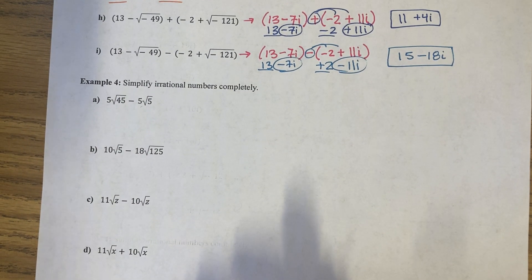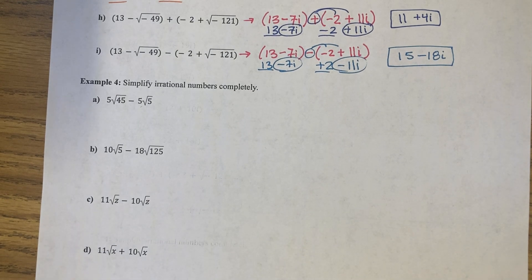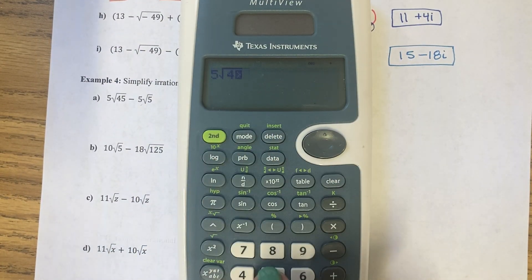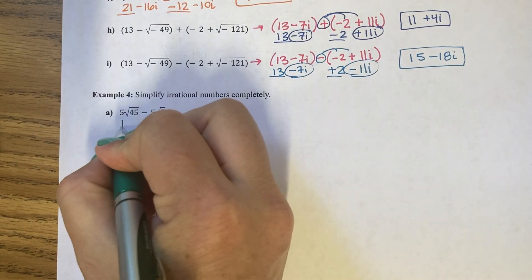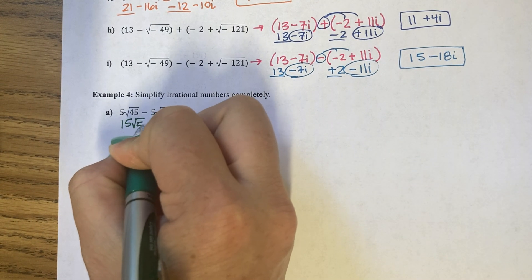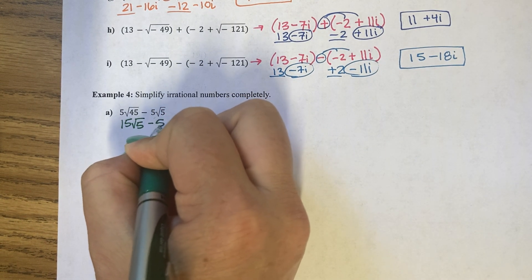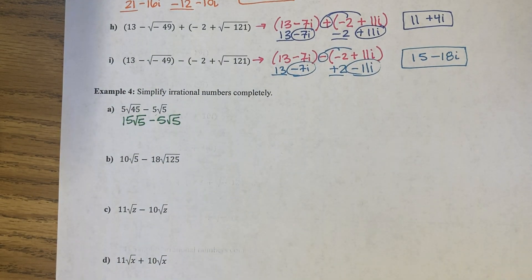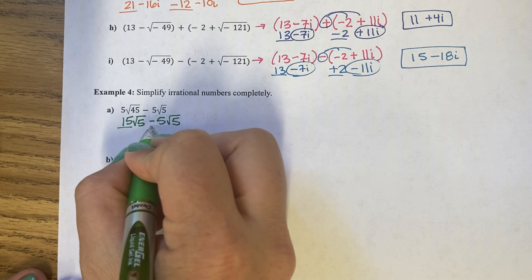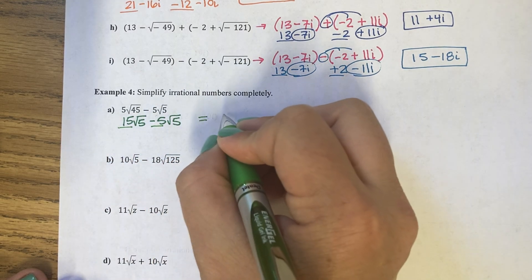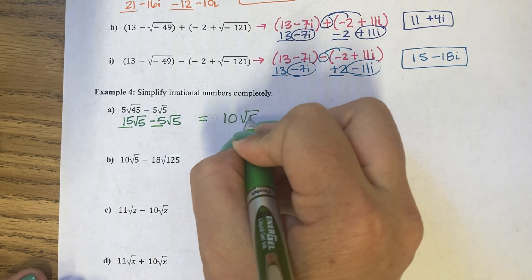Simplifying irrational numbers completely. We have 5 square root 45. Well, 5 square root 45 is 15 root 5. And then I have minus 5 root 5. Because my roots match, 15 minus 5 equals 10 root 5.